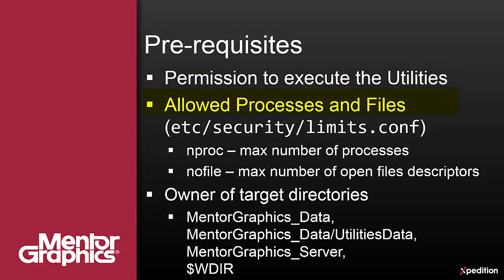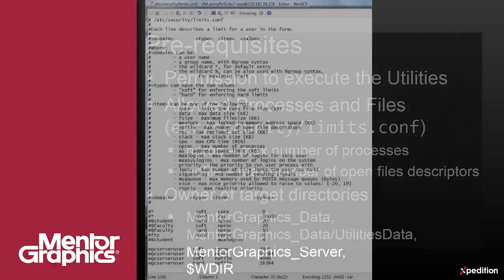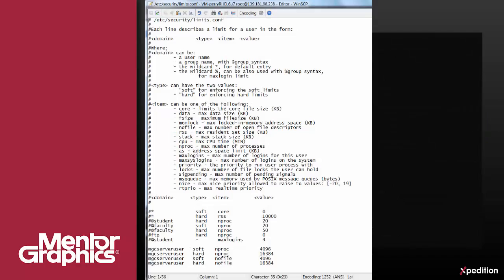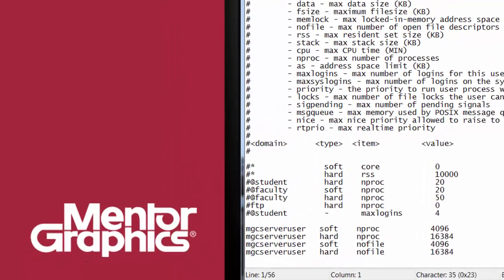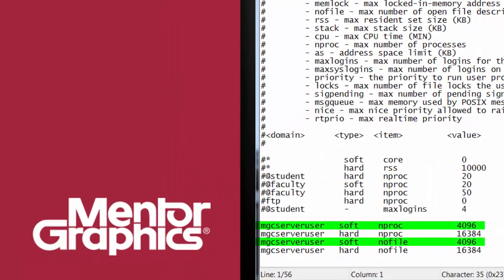You need to verify that the standard user — for example, MGC server user — has proper configuration of nproc and nofile set in the limits.conf file located in the etc/security directory. The user should have at least 4096, as shown here.